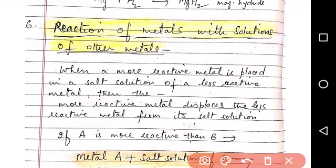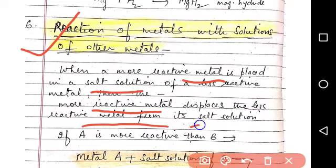Next reaction is reaction of metals with solutions of other metals. When a more reactive metal is placed in a salt solution of a less reactive metal, then the more reactive metal displaces the less reactive metal from its salt solution. This reaction you have already read. And this reaction is called displacement reaction.